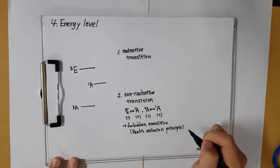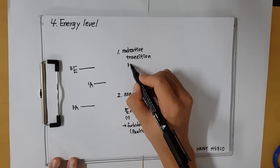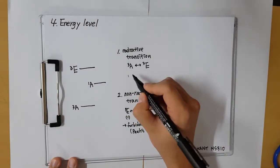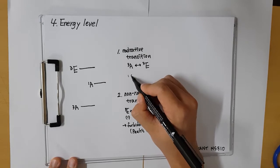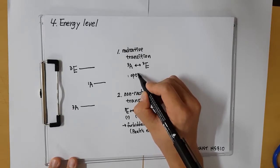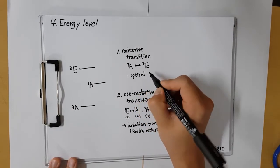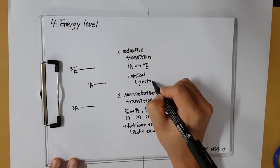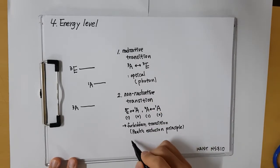And also, the example of radiative transition is transition that excited triplet state to ground triplet state. Then what is mean of radiative and non-radiative?